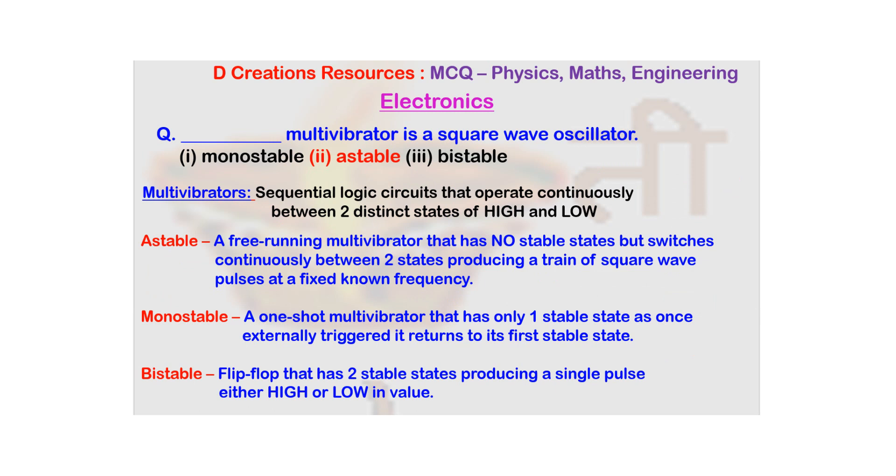Now in case of bistable, it's a flip-flop and it has two stable states. So there could be a single pulse which has high value or a low value as well.